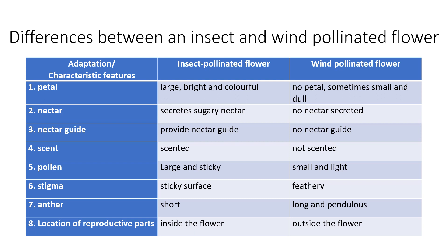Regarding the stigma: the stigma of the insect-pollinated flower must be sticky on its surface to ensure better landing of the pollen, while in the wind-pollinated flower the stigma must be feathery to efficiently catch the pollen carried by the wind.